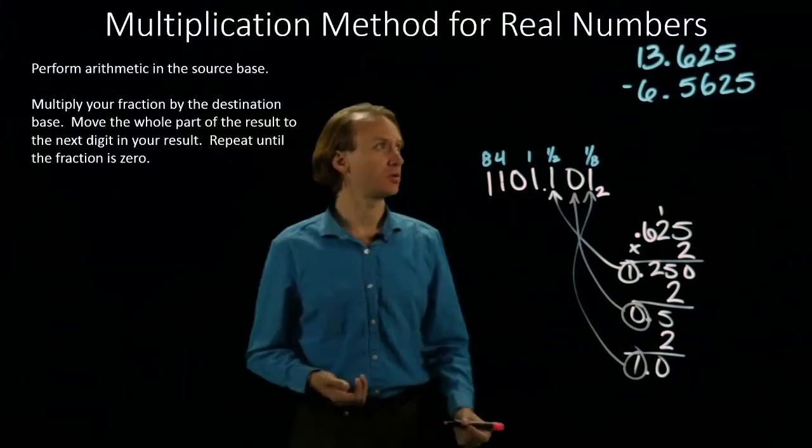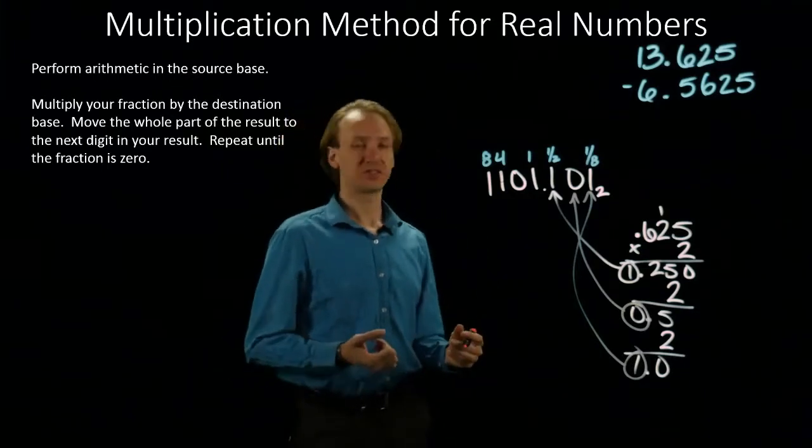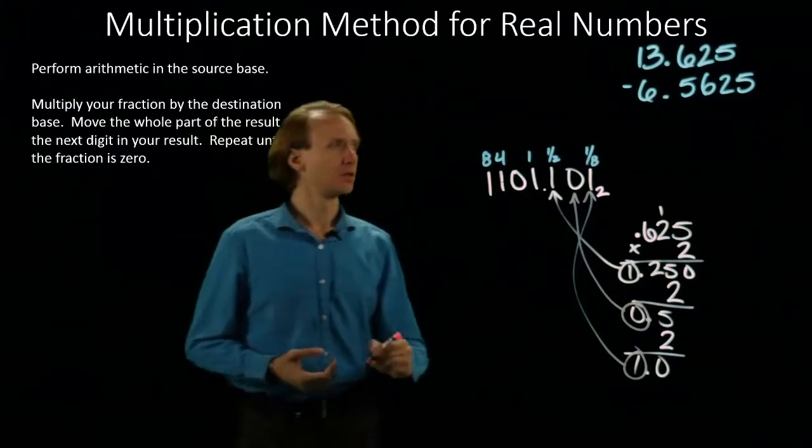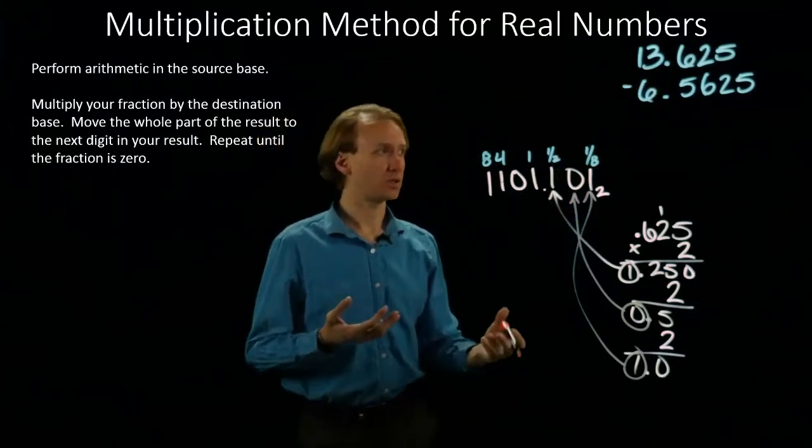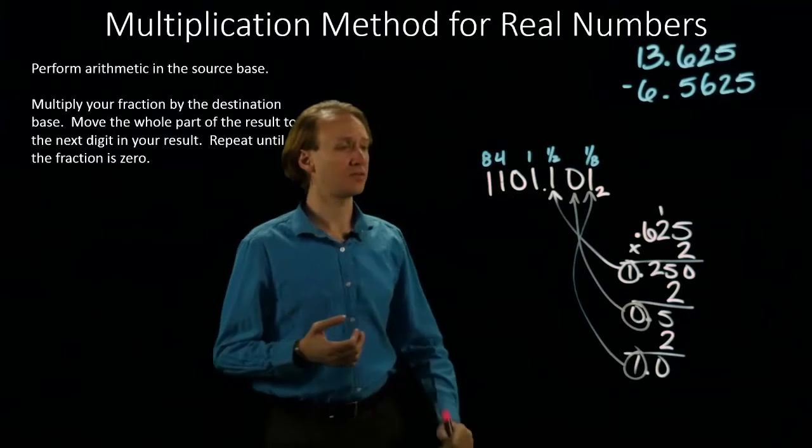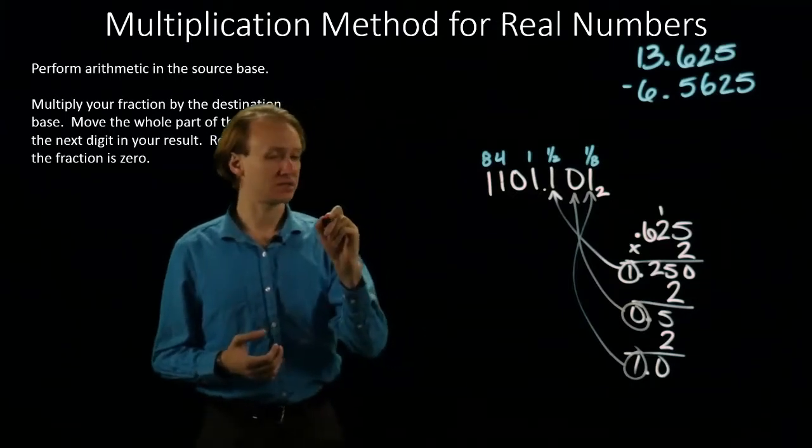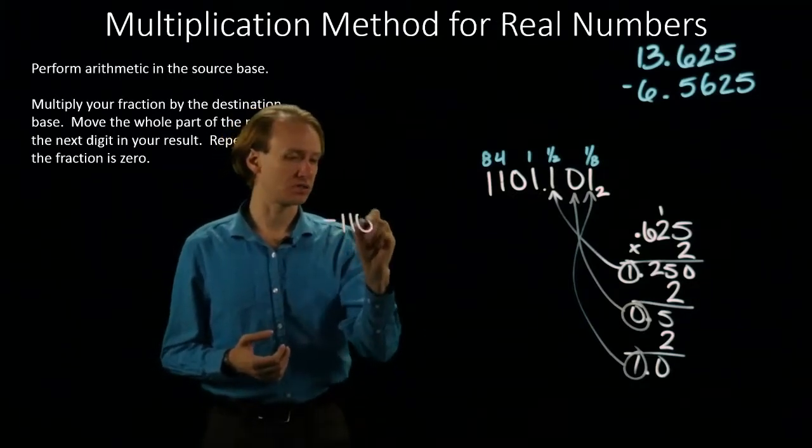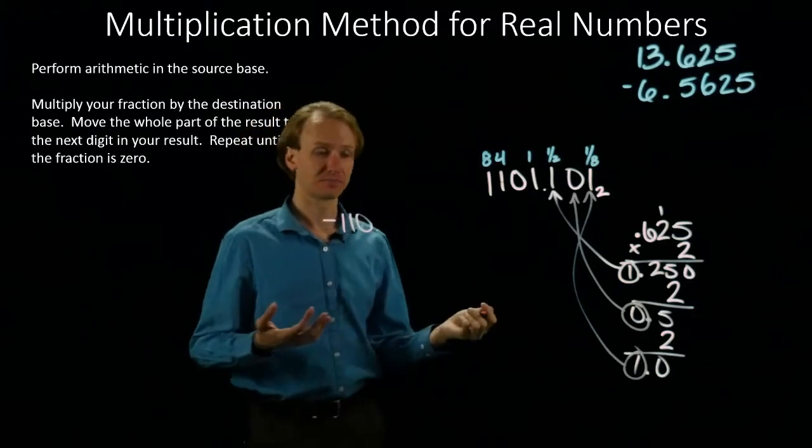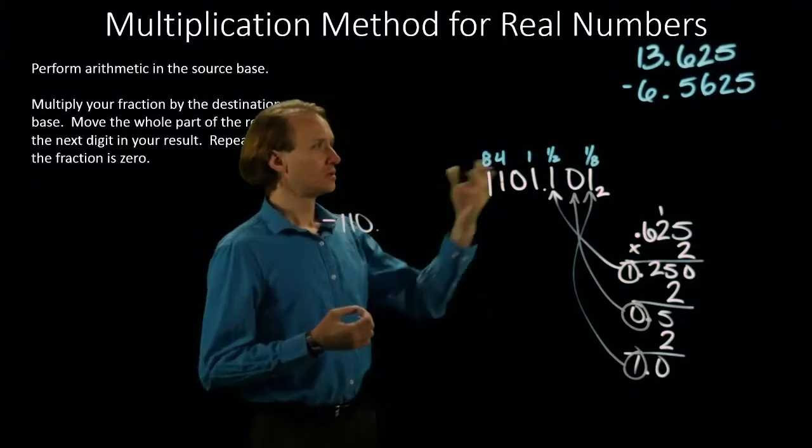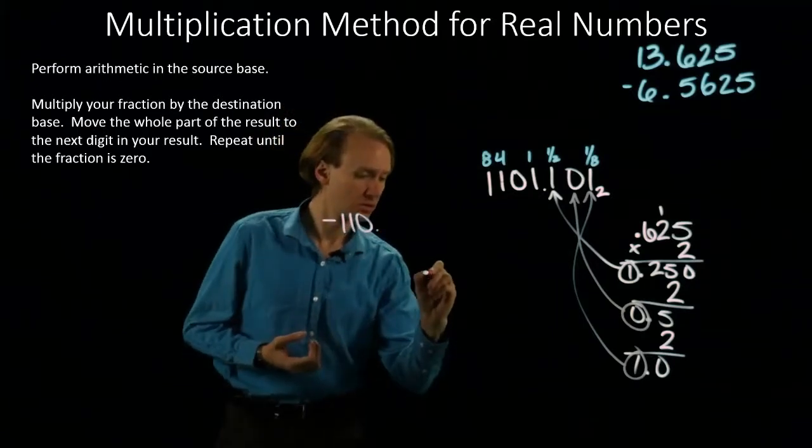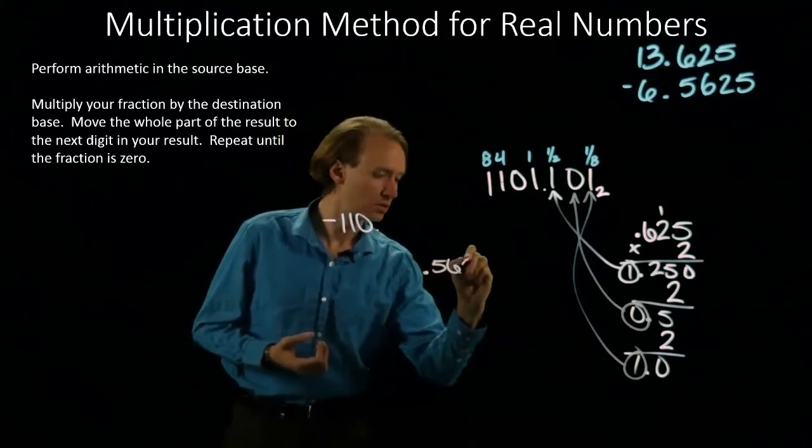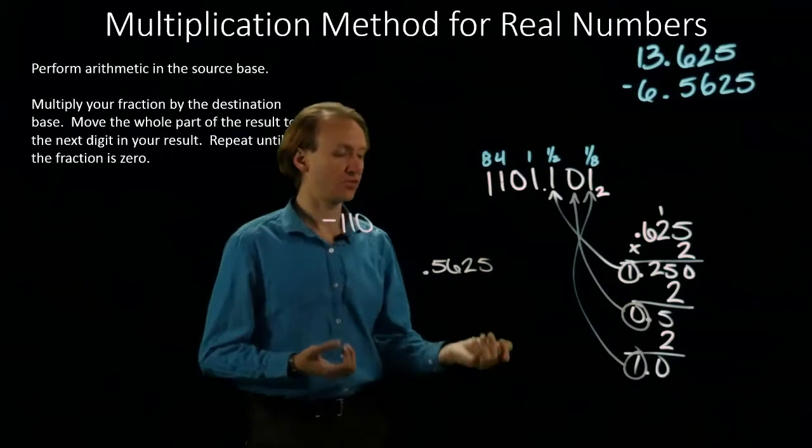Our second example is negative 6.5625. So, again, I'll do the negative 6 part separately from the 0.5625. This negative 6 is minus 110 in binary. Now, I want to do the 0.5625. So, I will write down that fraction.